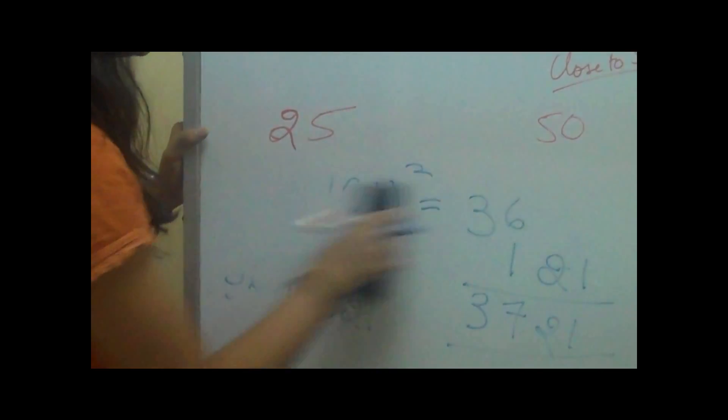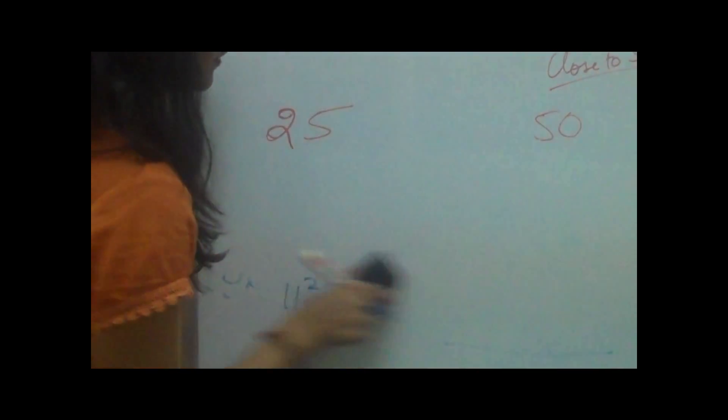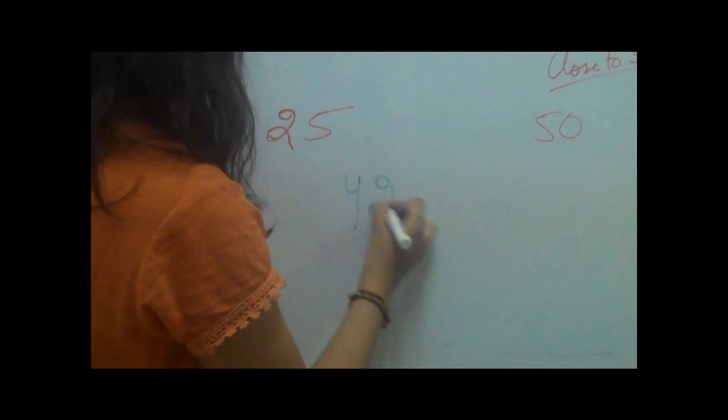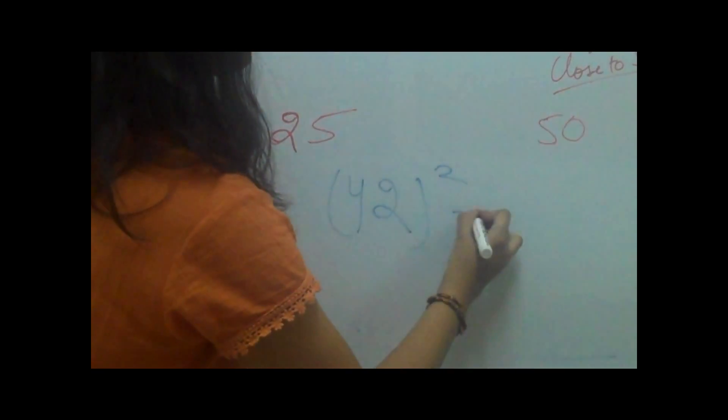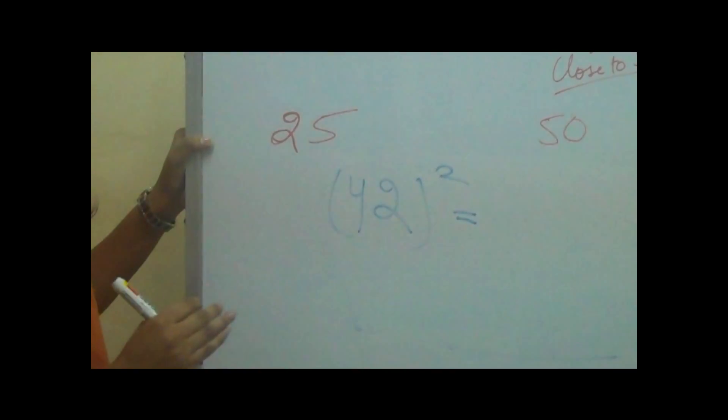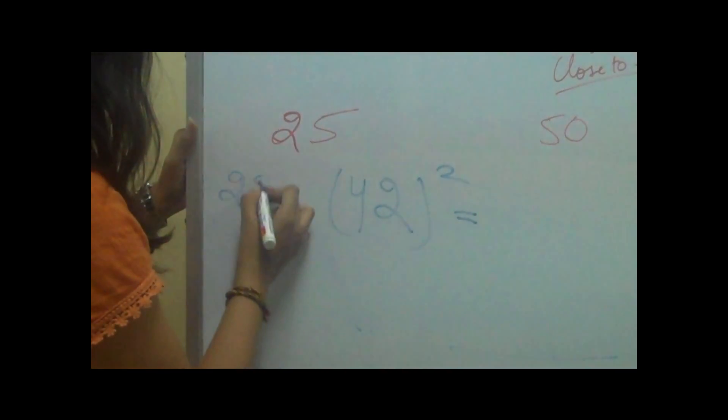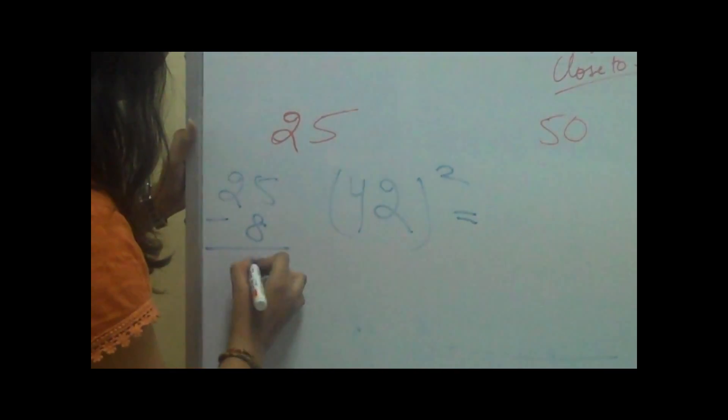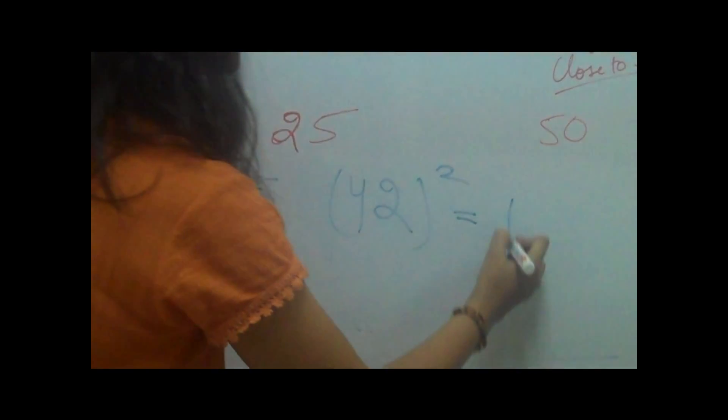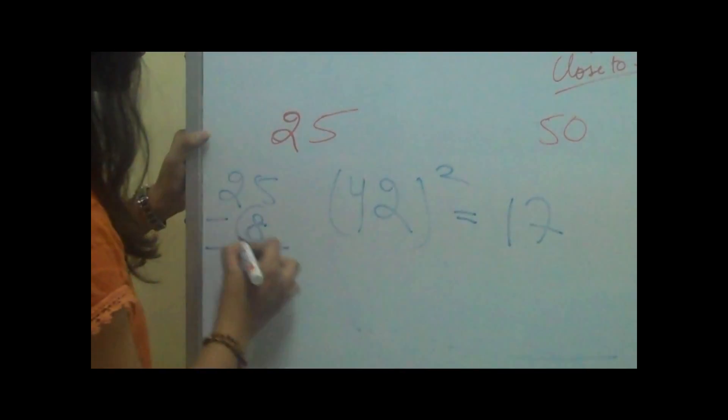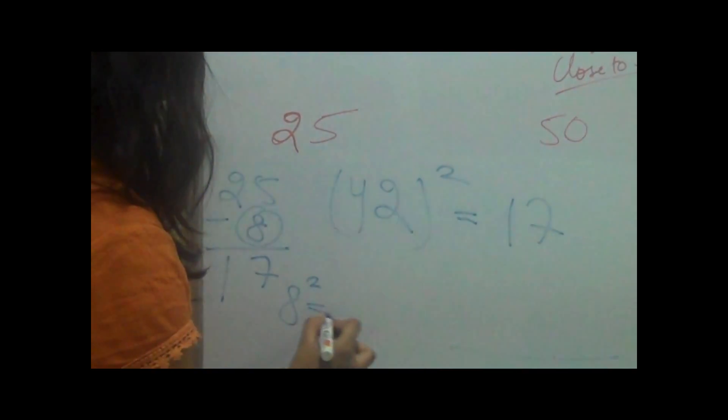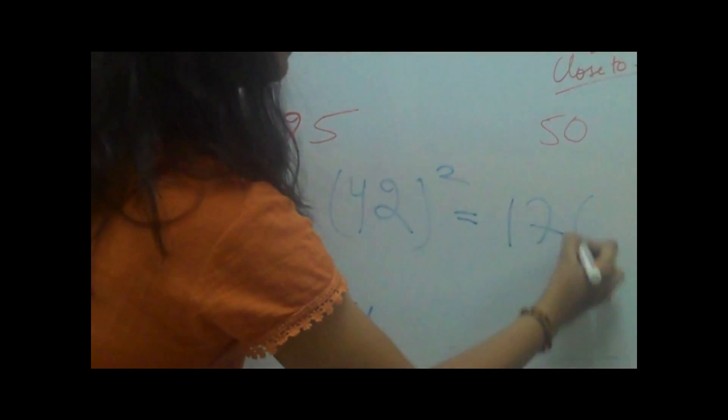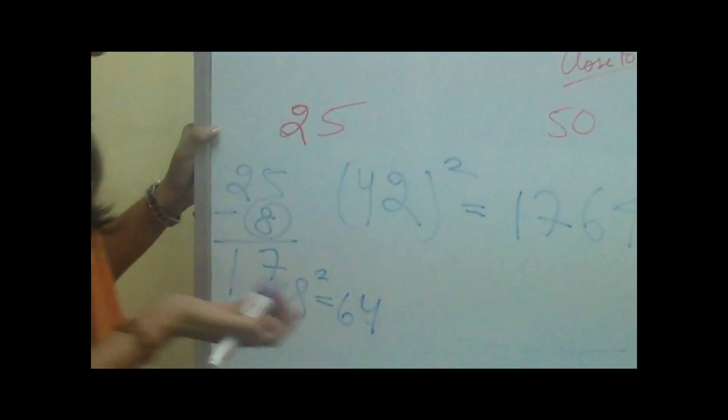Let's take an example of digits which are less than 50. Now since 42 is less than 50, 42 is 8 less than 50. We'll subtract 8 from 25 which makes 17. We'll write over here and then we'll square the 8 which is 64. We'll write over here. So this is the answer.